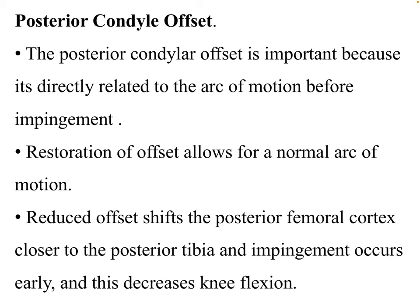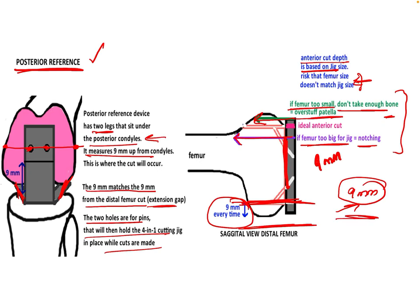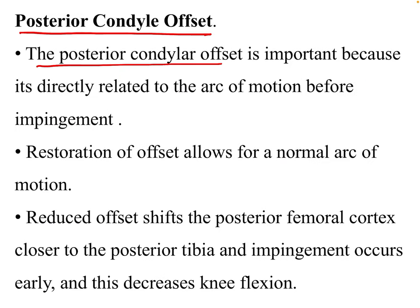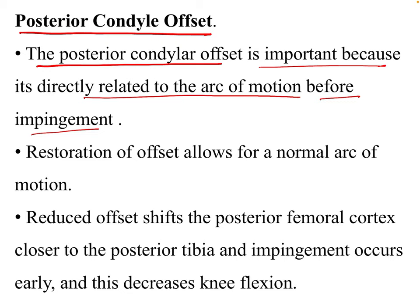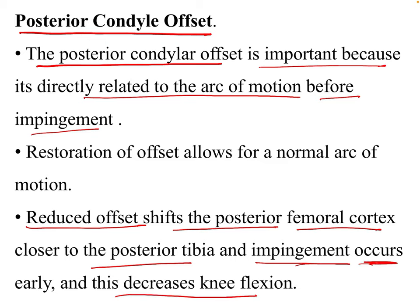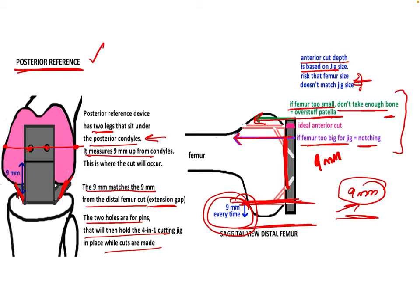We should also discuss the posterior condyle offset, which is the amount of bone removed from the posterior condyle. This is important because it is directly related to the arc of motion before impingement, determining flexion in a total knee replacement. If reduced offset occurs — that is, less bone is removed — the posterior femoral cortex shifts closer to the posterior tibia, causing impingement and a decrease in knee flexion.